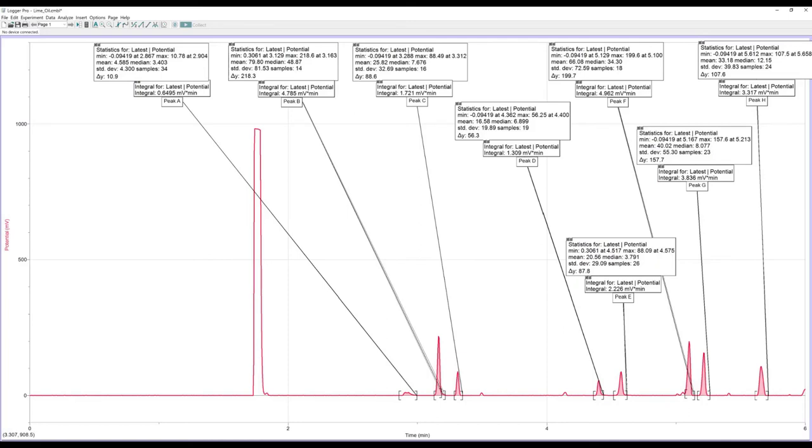Each of the major peaks, labeled A through H, needs to be identified as either limonene, geraniol, nirel, or unknown, and the percentages of these peaks determined. That's covered in a previous video, so you should definitely check that out if you haven't had a chance to already.